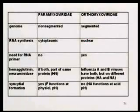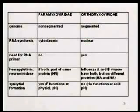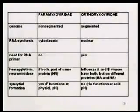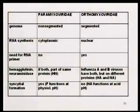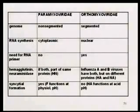The paramyxoviruses do not need an RNA primer for their message synthesis, whereas the orthomyxoviruses do. The reason they use an RNA primer is that they use the ends of host cell messages as primers, and they do this in order to grab a methylated cap group rather than synthesizing it themselves.